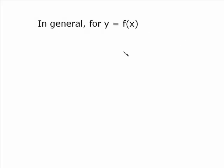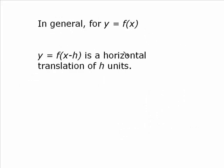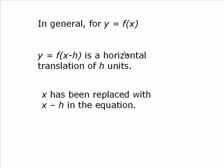So in general, for any function y equal f(x), y equal f(x minus h) is a horizontal translation of h units. So you've got to get in the habit of identifying that the sign changes. As we've seen there, the sign is always opposite for horizontal translations. This is what we're actually doing. We're replacing x with x minus h.